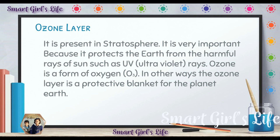The ozone layer protects the Earth from the harmful rays of the sun. One example of the harmful rays is UV — ultraviolet rays. The ozone layer is very important because it protects the Earth from the harmful rays of the sun, such as UV ultraviolet rays.